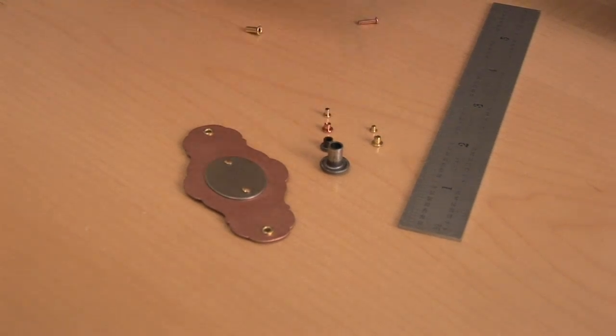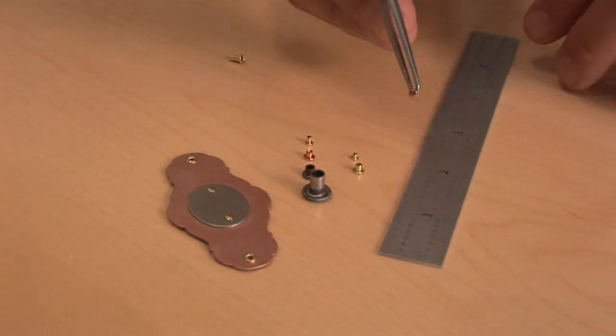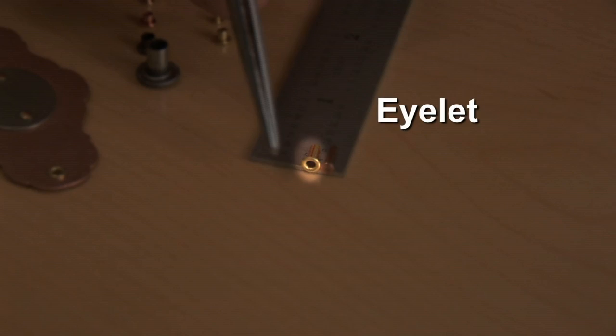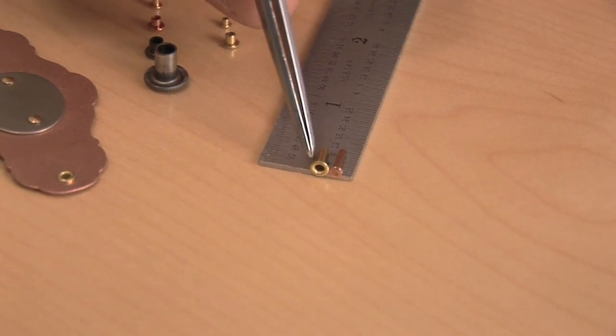So, how do you measure the length of a rivet or eyelet? Well, the length of a rivet is measured from just under the head down to the end. And an eyelet is measured the same way, from under the head to the end of the shaft.